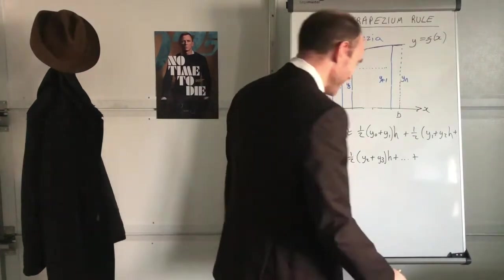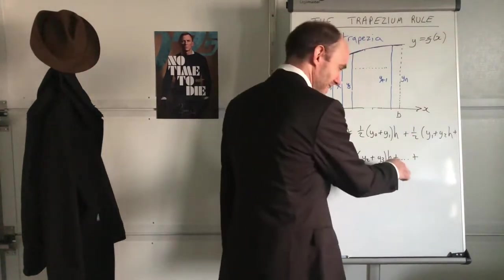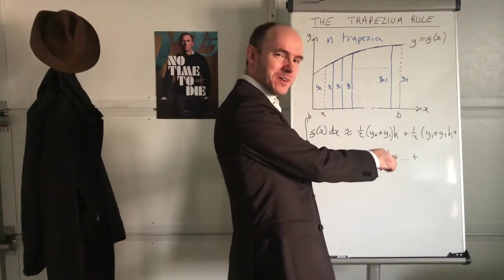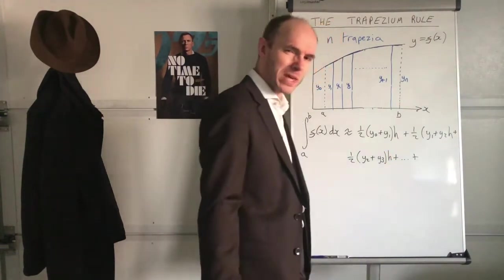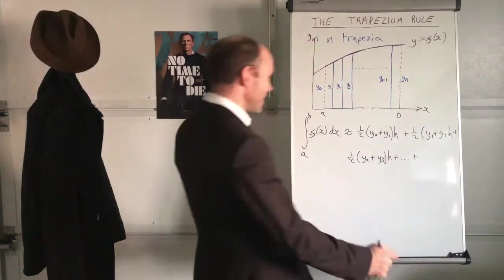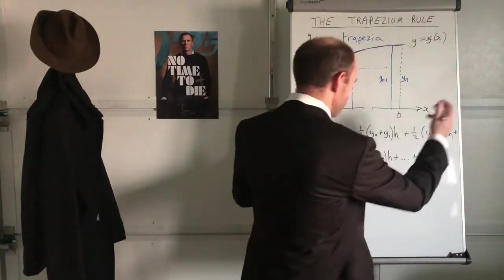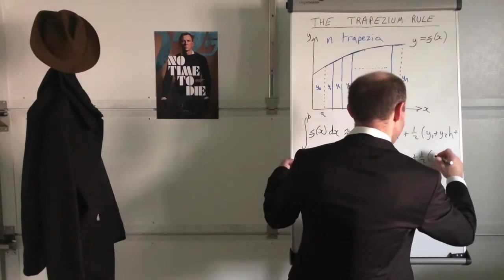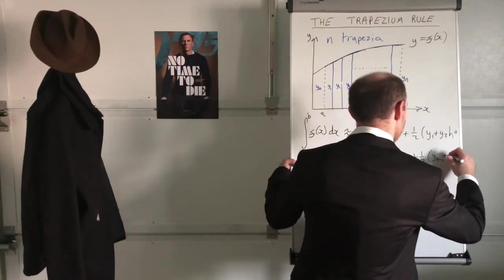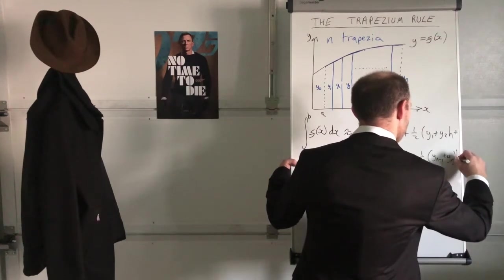Almost every time I write dot dot dot and I say dot dot dot, that sort of scene goes in my head. It's annoying. There you go. Anyway, you're going to watch Mamma Mia now, aren't you? Okay, last one, so that's going to be half y n minus one plus y n h. Done.